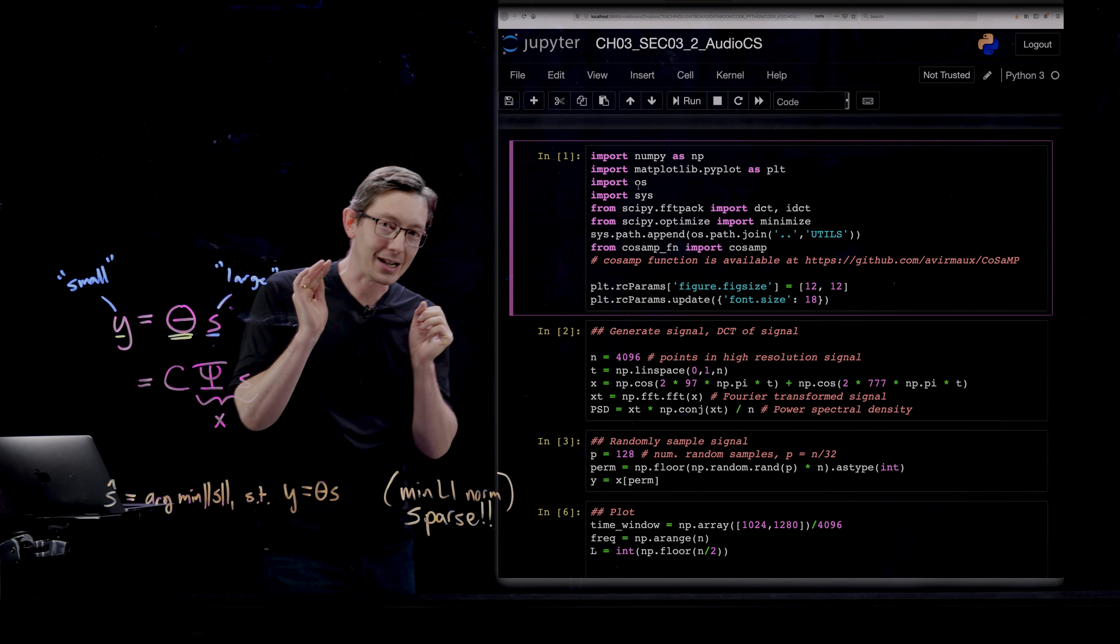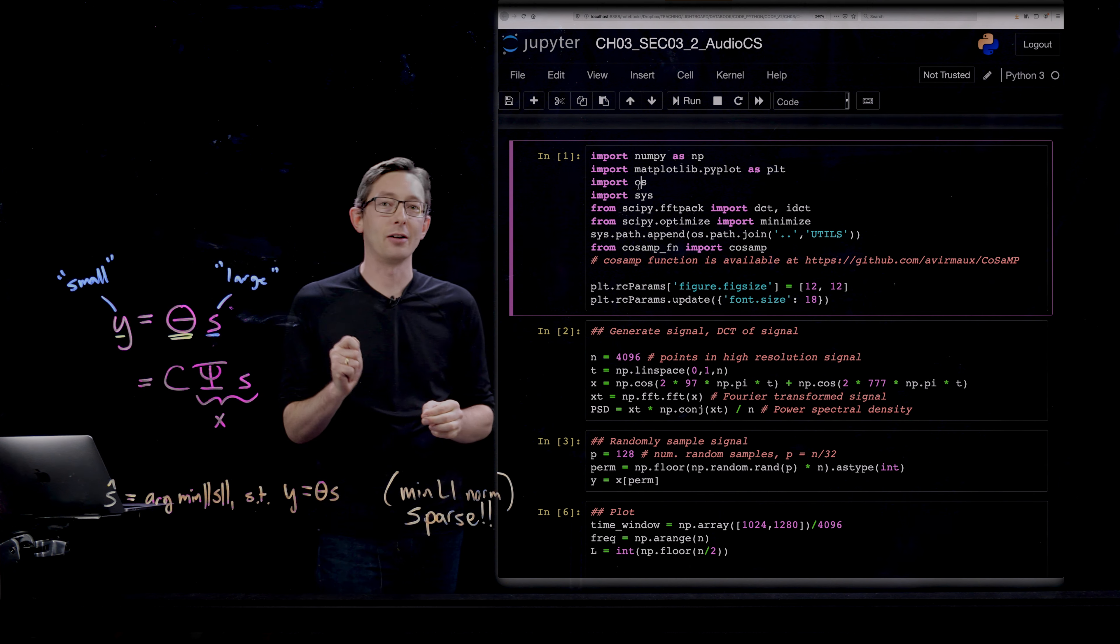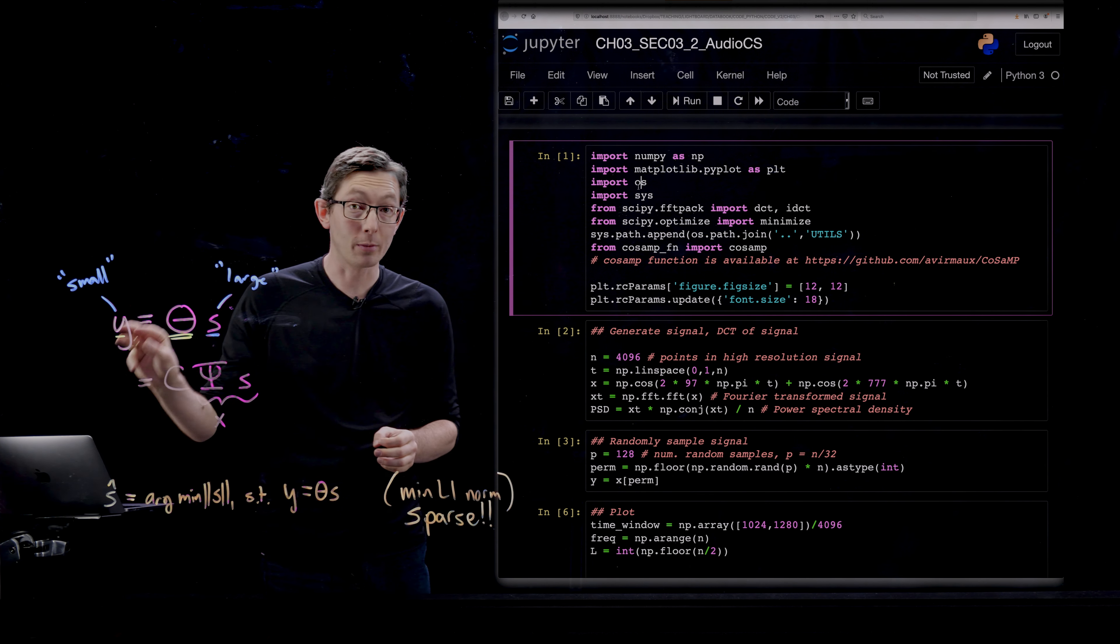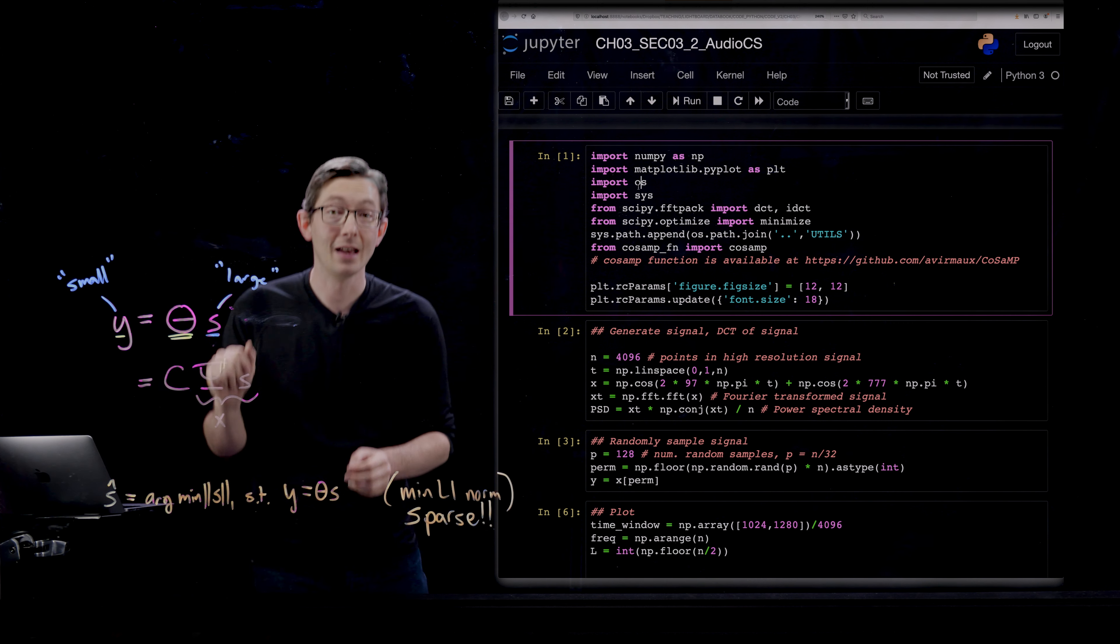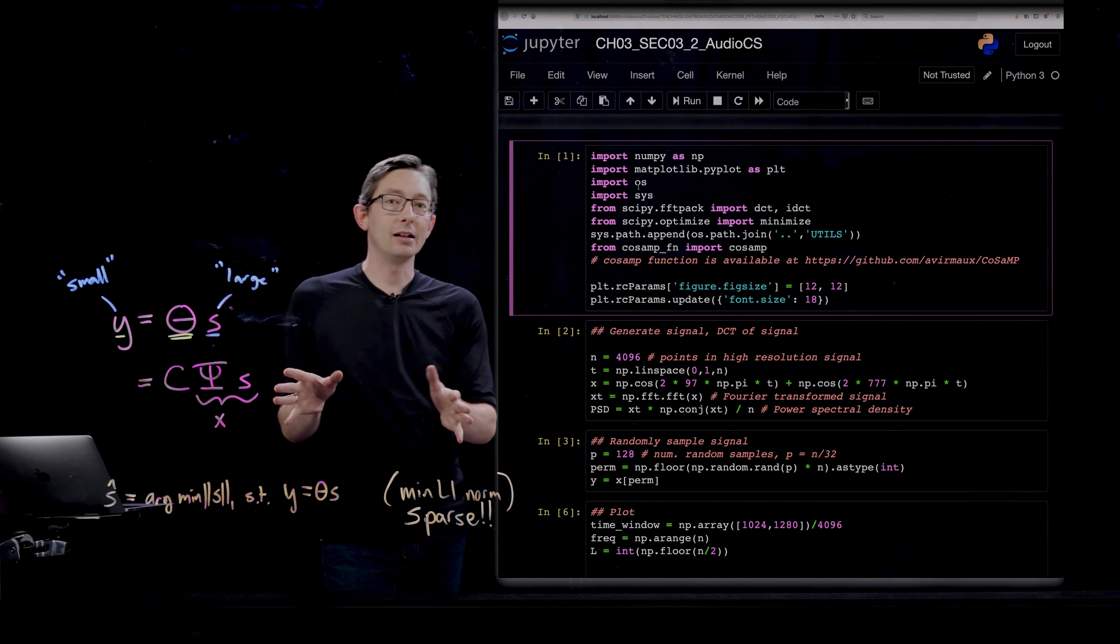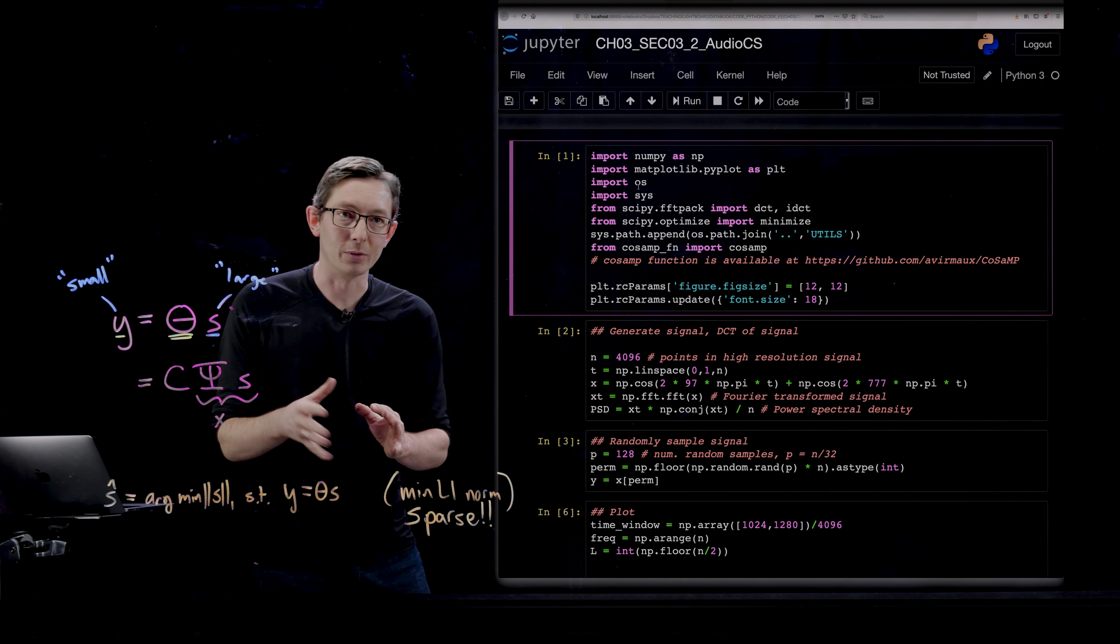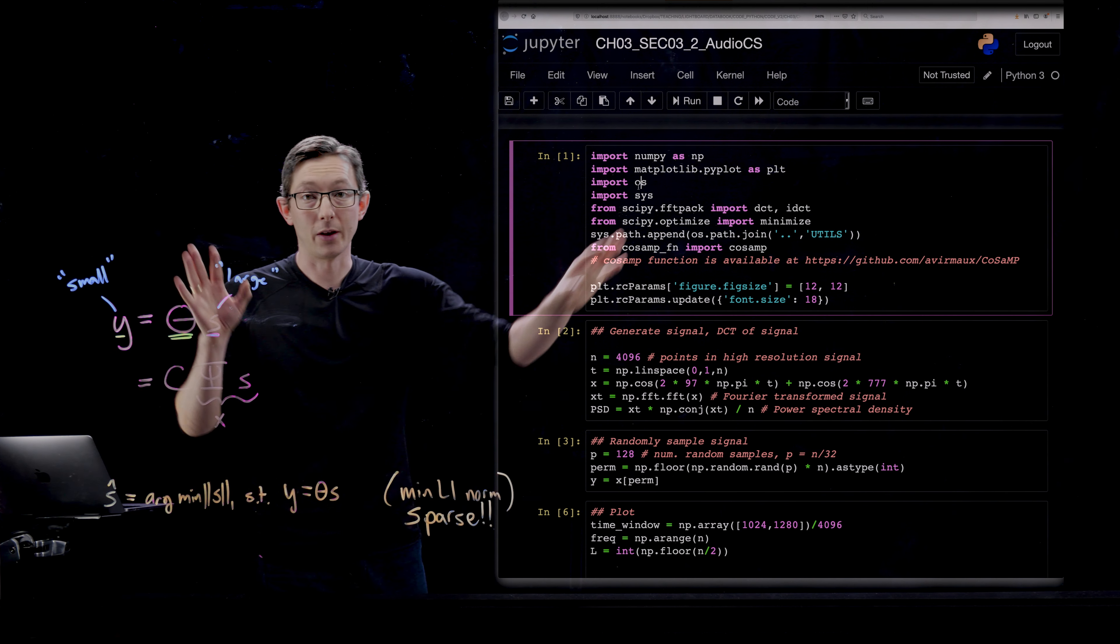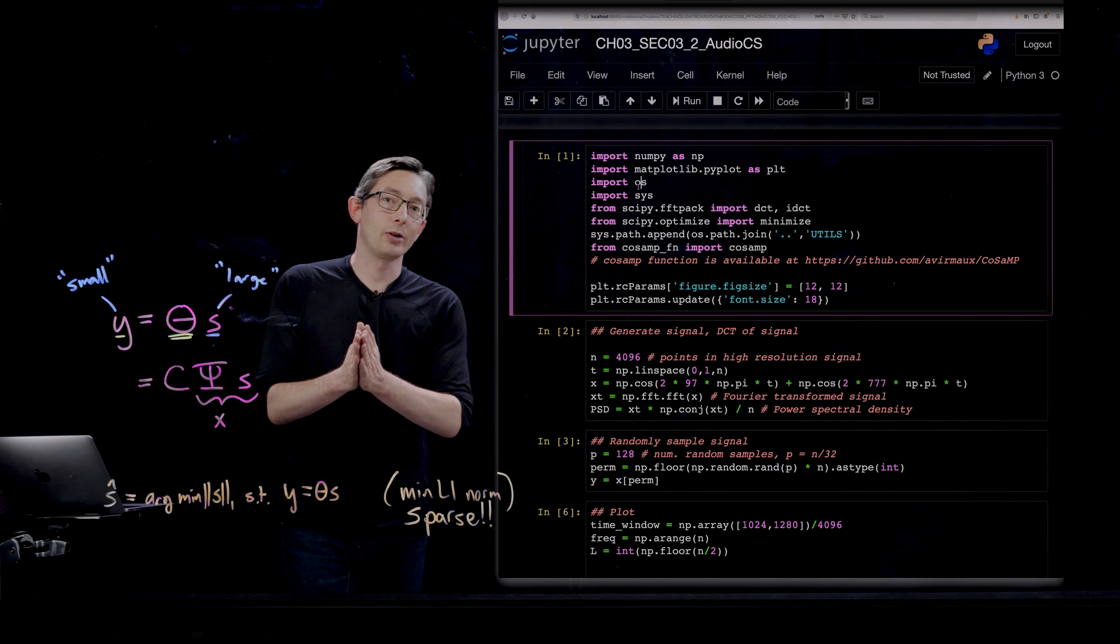Welcome back everyone. So we've been talking about compressed sensing and how you can get away with many fewer measurements than you would normally think you could if those measurements have an aspect of randomness to them. And I'm going to illustrate this on a really fun example, which is kind of a toy example of an audio signal in Python.